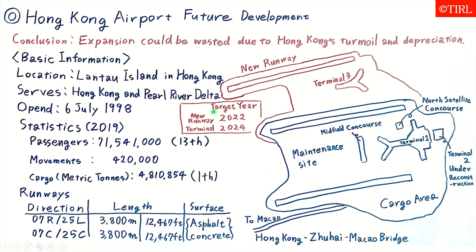The target completion year for the new runway is 2022, and Terminal 3 is 2024. In the future, this airport will have three runways and three terminals.